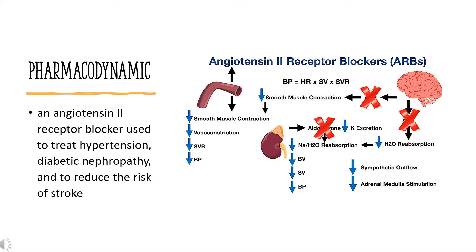Angiotensin II binds to two receptors: type 1 angiotensin II receptor, AT1, and type 2 angiotensin II receptor, AT2. AT1 is a G-protein-coupled receptor, GPCR, that mediates the vasoconstrictive and aldosterone-secreting effects of angiotensin II. Studies suggest that AT2 antagonizes AT1-mediated effects and directly affects long-term blood pressure control by inducing vasorelaxation and increasing urinary sodium excretion. Angiotensin receptor blockers, ARBs, are non-peptide competitive inhibitors of AT1 that block angiotensin II's ability to stimulate pressor and cell proliferative effects. Unlike ACE inhibitors, ARBs do not affect bradykinin-induced vasodilation. The overall effect of ARBs is a decrease in blood pressure.